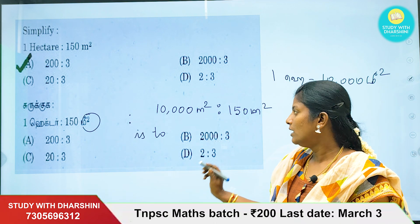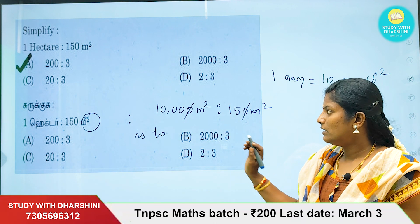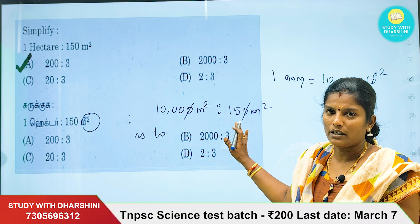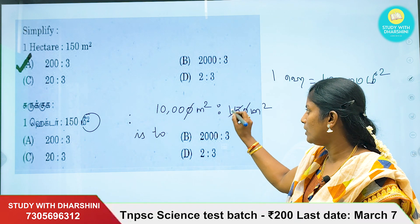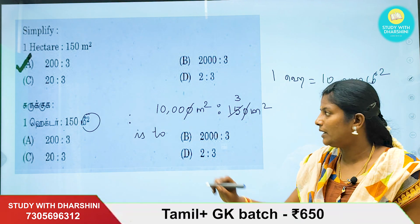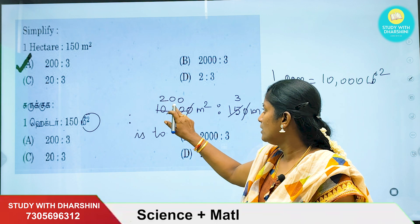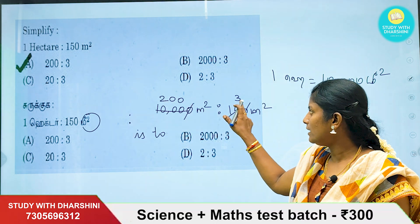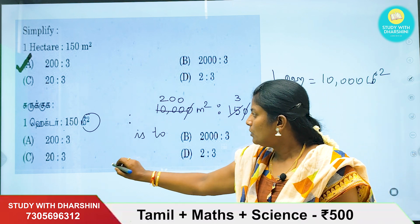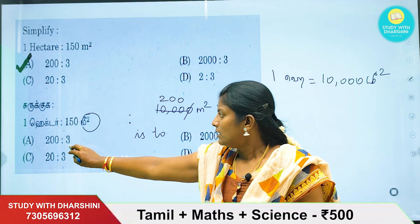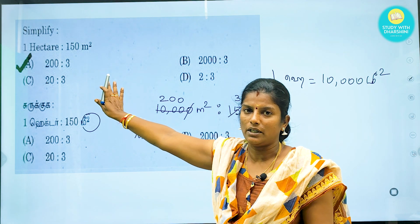We can simplify these two values — cancel the zeros. So if you have 1000 and 15, you need to solve using the 5 tables: 3 fives are 15, 2 fives are 10. So 200 meters squared to 3 meters squared. This is our answer: 200 is to 3. Option A answer: 200 is to 3.